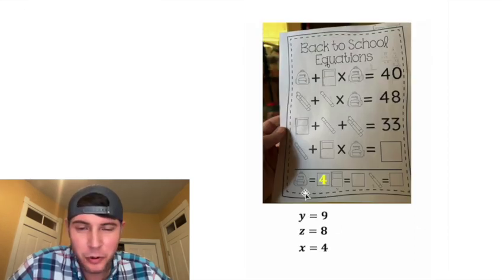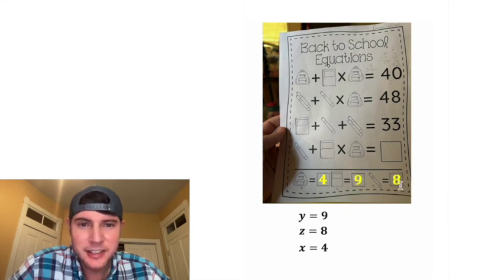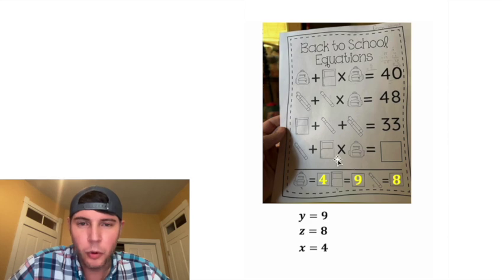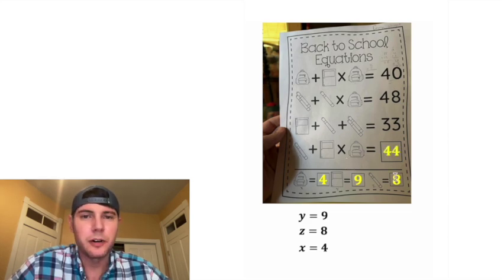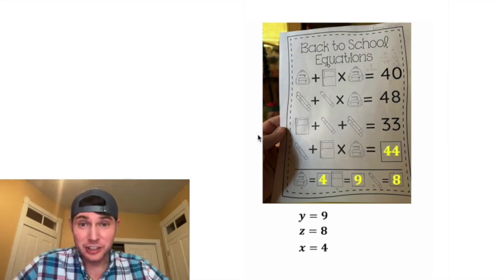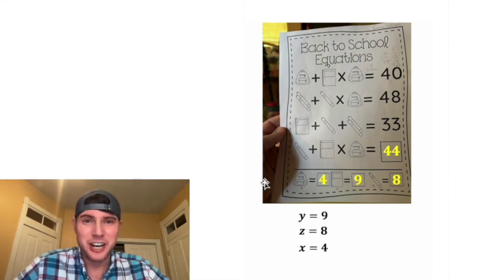Let's bring back the original sheet. x is 4, so we plug in 4 for the backpacks; y is 9 and z is 8. For the final box it's going to be 9 times 4, which is 36, plus 8, which is 44. So this sheet that looks like it belongs in elementary school was actually quite a bit of work — how exciting!